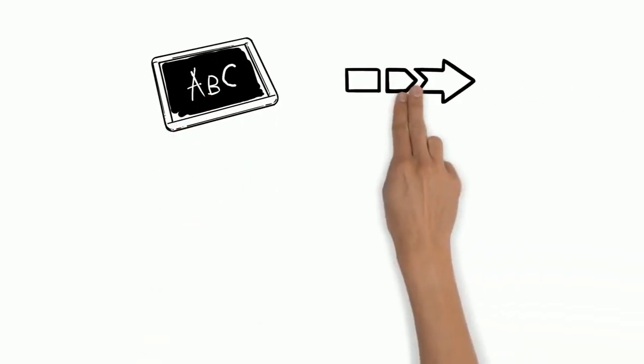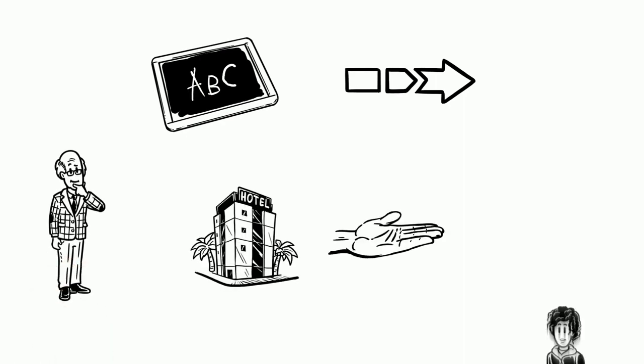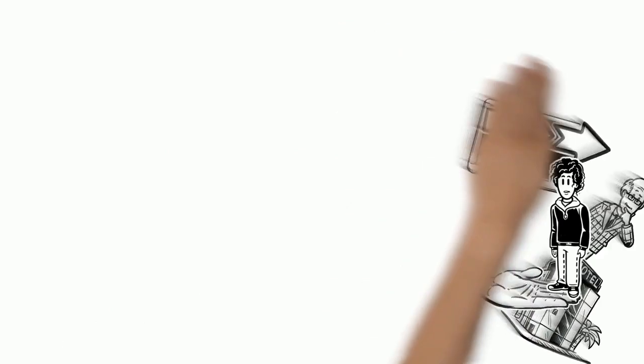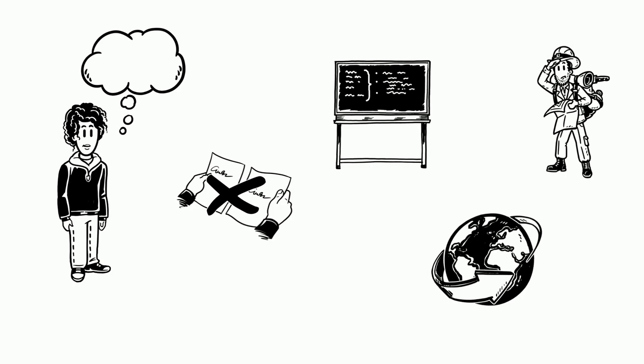Once their school years were over, they had to make decisions about their futures. As the father was too old to run the hotel, he handed it over to his son. Erik had to forget his dreams about being a teacher and exploring the world.